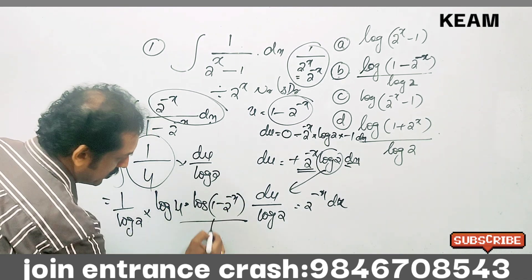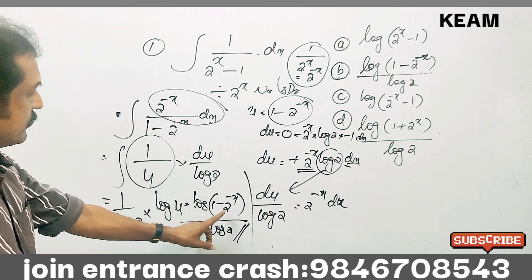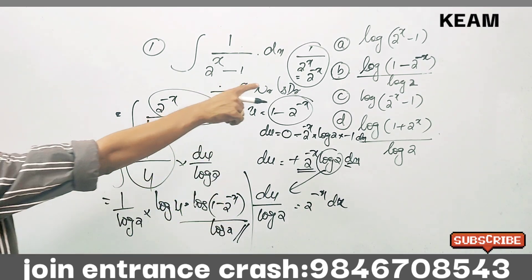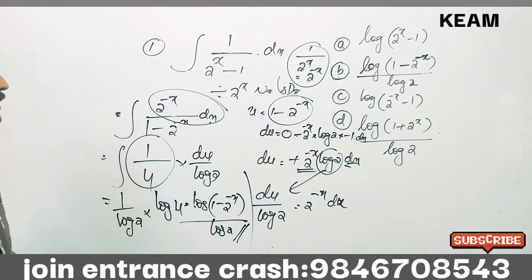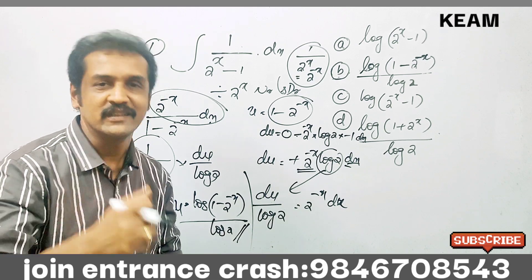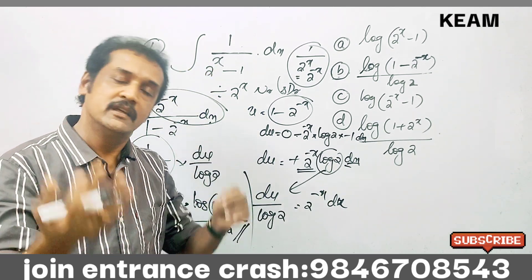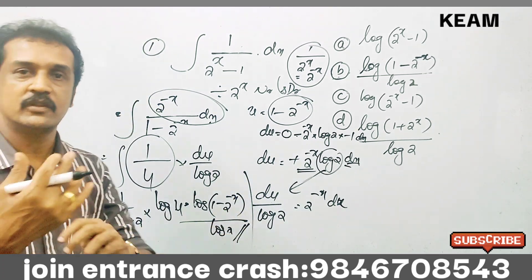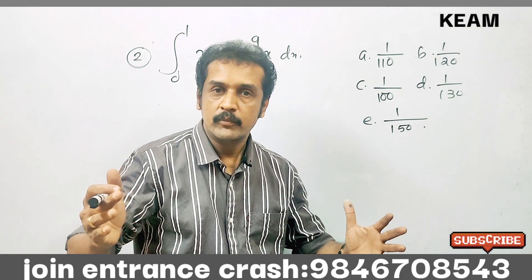So the answer is log of (1 minus 2^(-x)) divided by log 2. This is the answer to the first question. This question is very important.